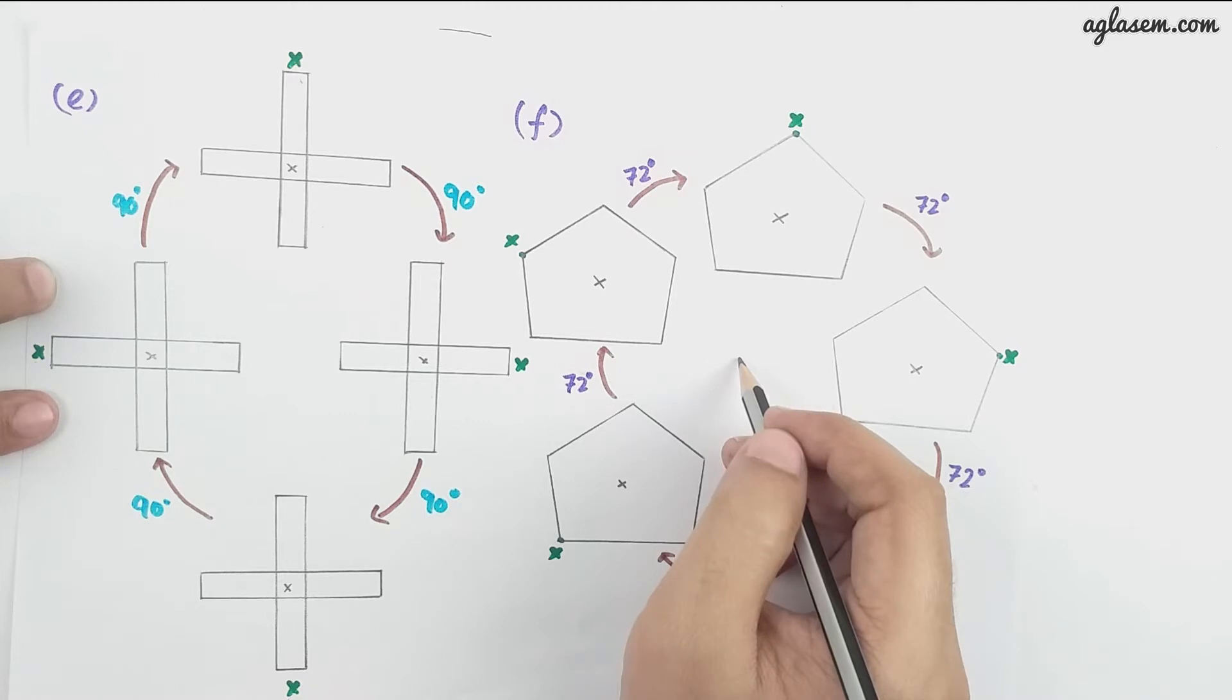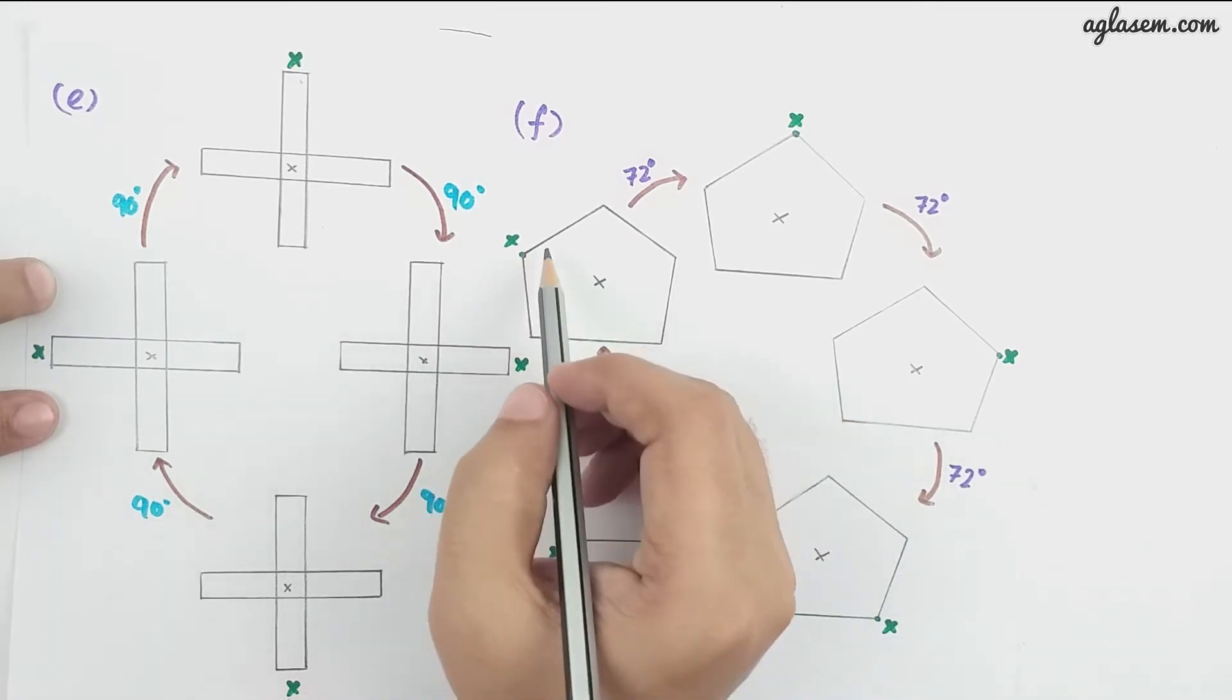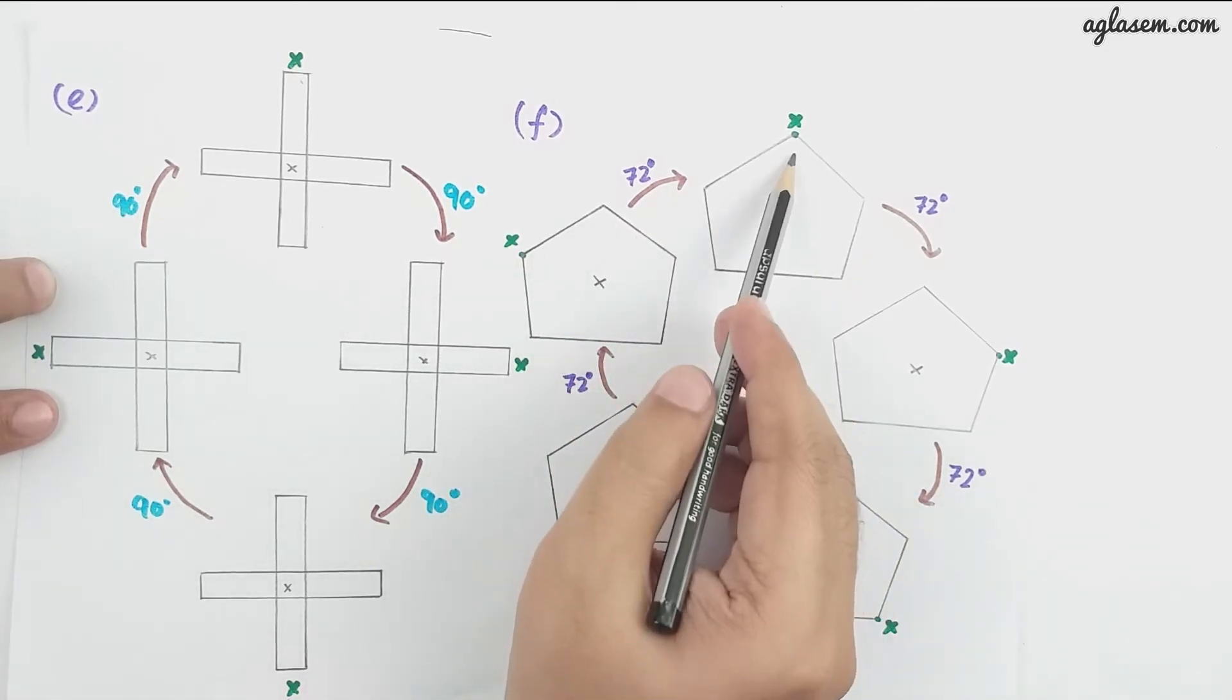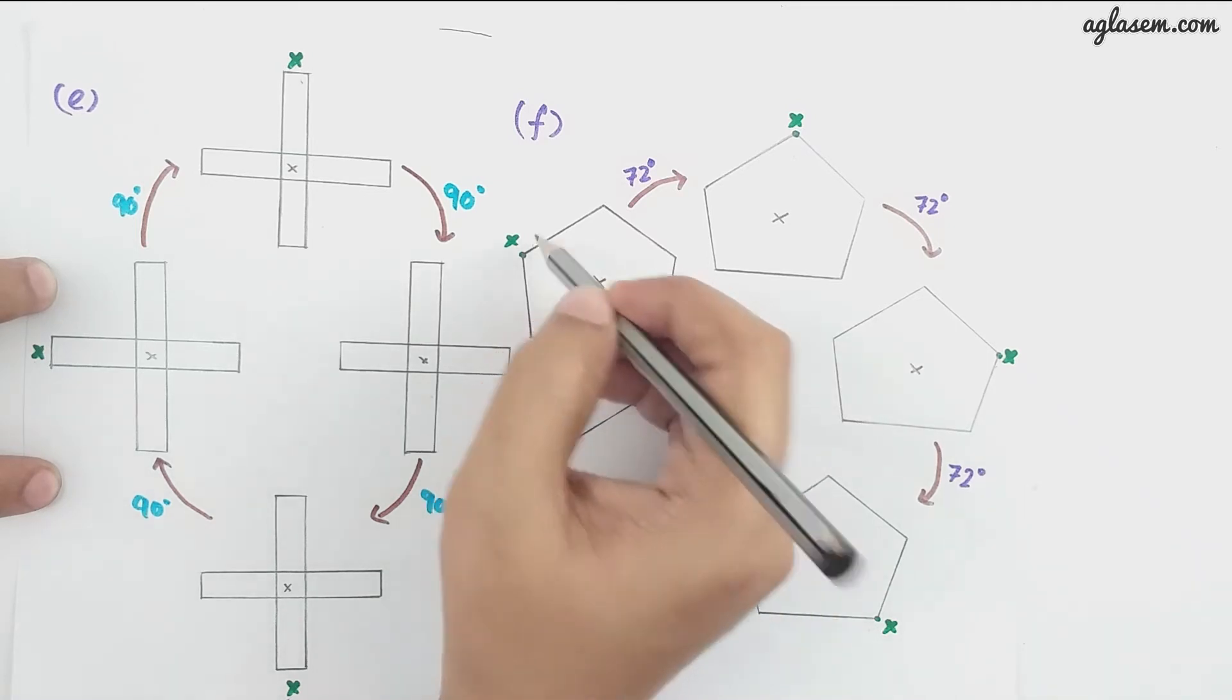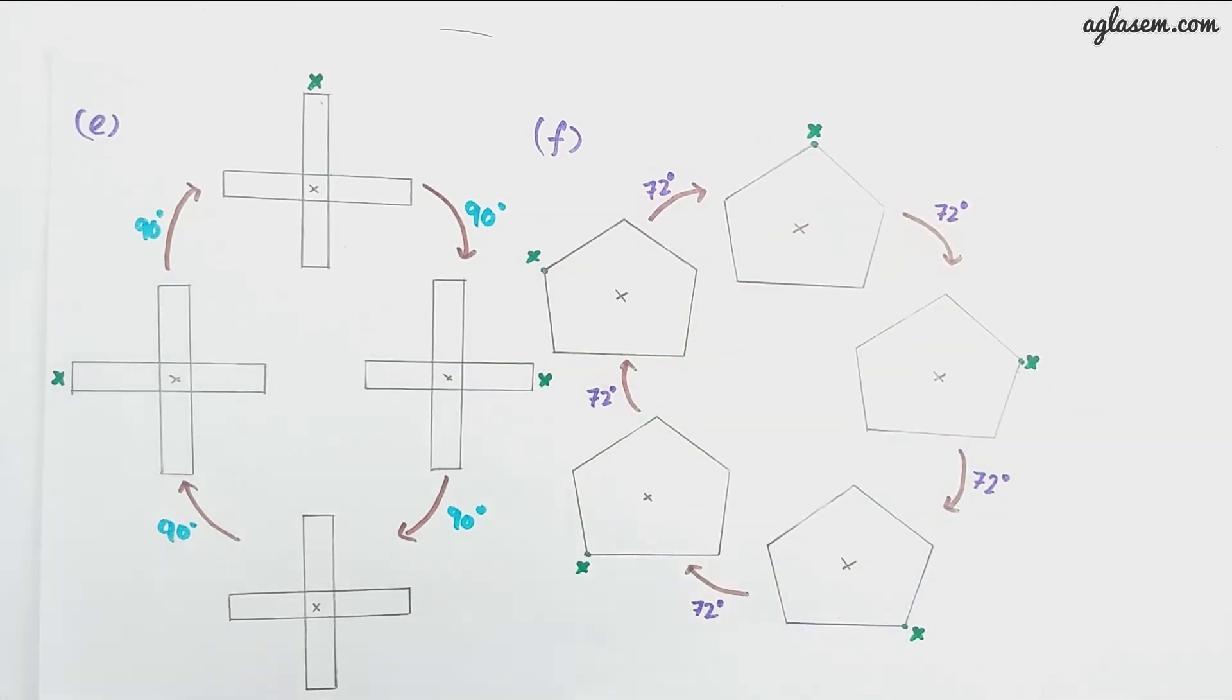The given figure has rotational symmetry of five. For figure F, remember this: if it is at top, if we rotate 72 degrees, one; 72 degrees again, one; again 72 degrees, one; again 72 degrees this; and finally this position.